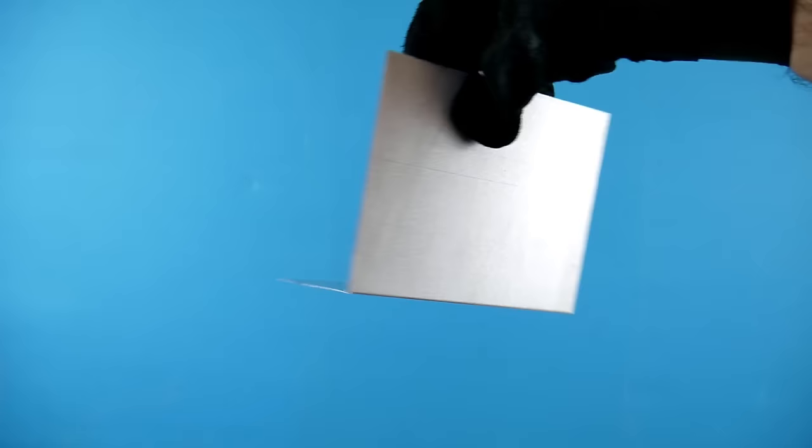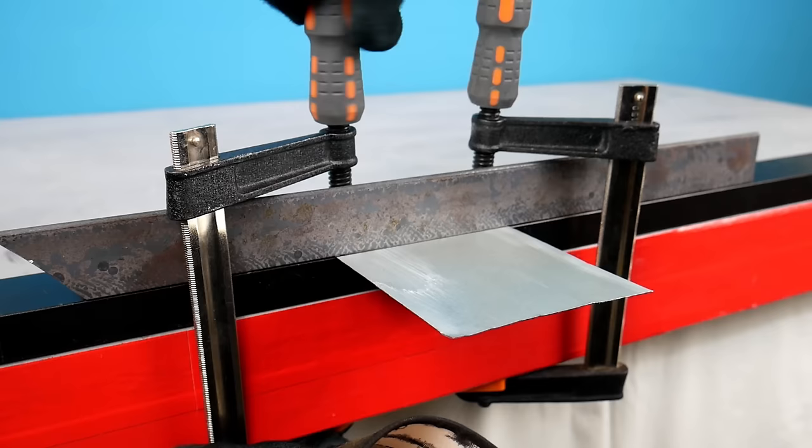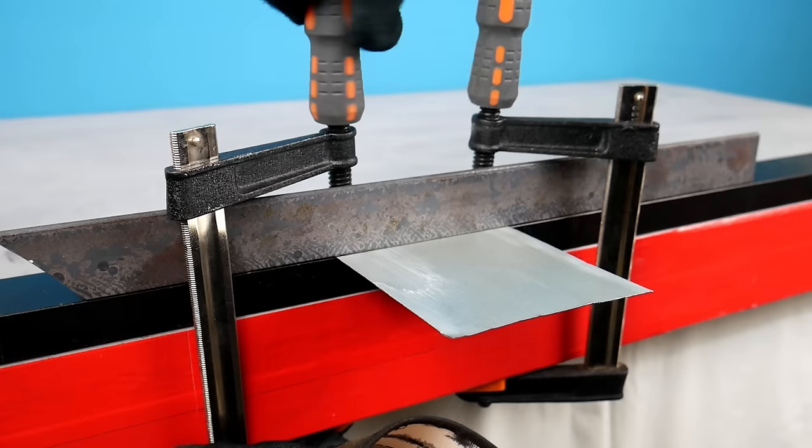But before we start, I'm going to answer a few questions and tell you a few things to consider when bending sheet metal. So what is a good bend? A good bend is defined by the radius of the bend, how straight it is, and if it meets the required angle.